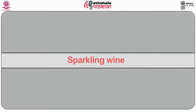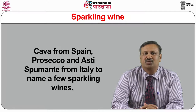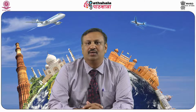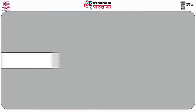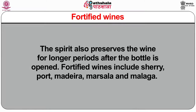Sparkling wines are those wines which get sparkle or effervescence from carbon dioxide. Cava from Spain, Prosecco and Asti Spumante from Italy are a few sparkling wines. The term champagne is reserved for sparkling wines made in the Champagne region of France, whereas other countries producing similar wines call them sparkling wines. Fortified wines are wines strengthened with the addition of grape spirit (brandy), which also preserves the wine for longer periods after the bottle is opened. Fortified wines include Sherry, Port, Madeira, Marsala and Malaga.